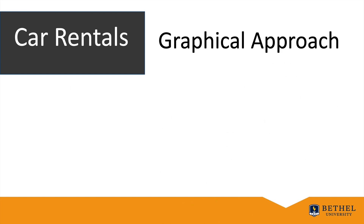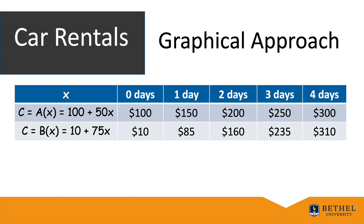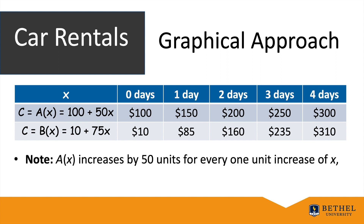Let's approach the same problem graphically. Expanding the table of values: rental A has cost formula A(x) = 100 + 50x and rental B has cost formula B(x) = 10 + 75x. At day four, A(4) = $300 and B(4) = $310 — rental B costs more than rental A.